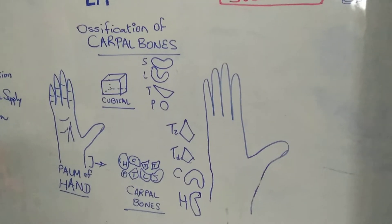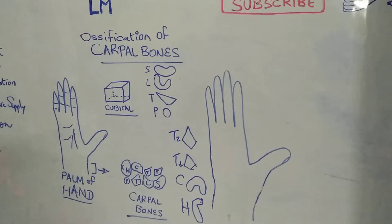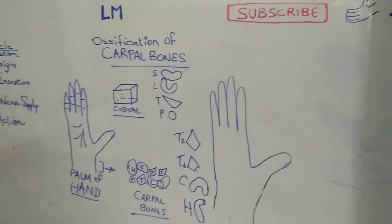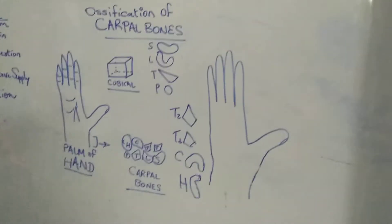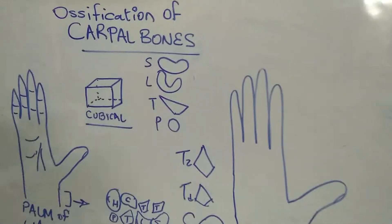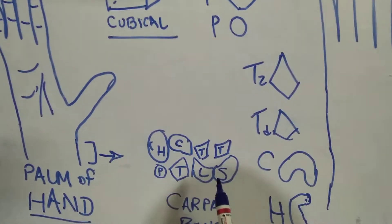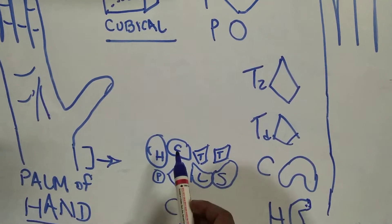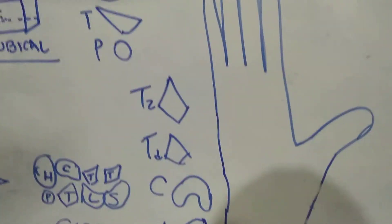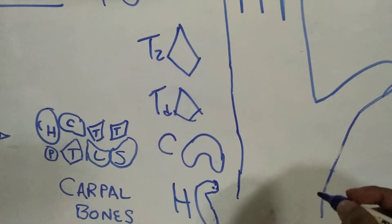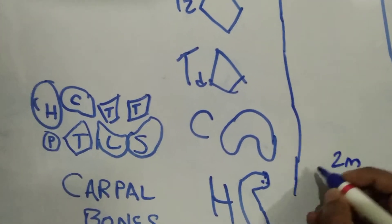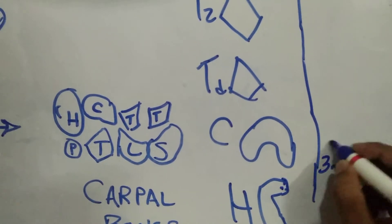Today's topic is ossification of these carpal bones — so when do they ossify in our body? As we can see in this diagram, the largest carpal bones are the capitate and hamate. The capitate ossifies from intrauterine life at two months, and the hamate at three months respectively.